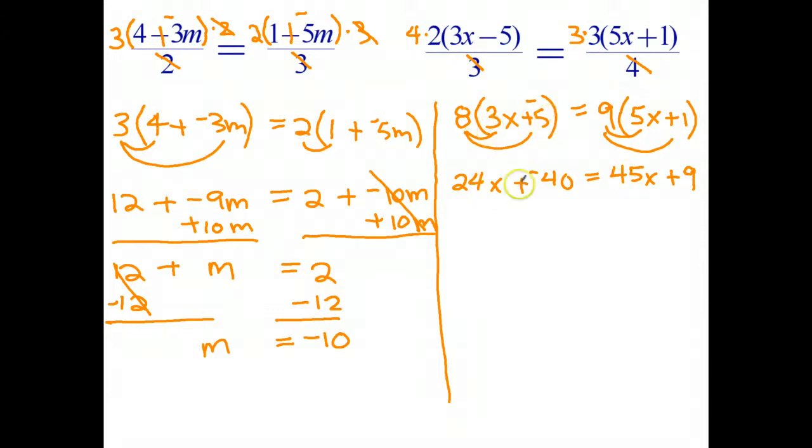Now I've got variables on both sides of the equation. I'm going to now take the smaller of the 2, subtract the smaller of the 2 from both sides. Take 24x from both sides. 24x take 24x goes to 0. Leaving me with negative 40. 45 take 24. Well, 45 take 20 is 25. Take another 4 is 21x. Or 5 take 4 is 1. 4 take 2 is 2. And then copy down the plus 9.